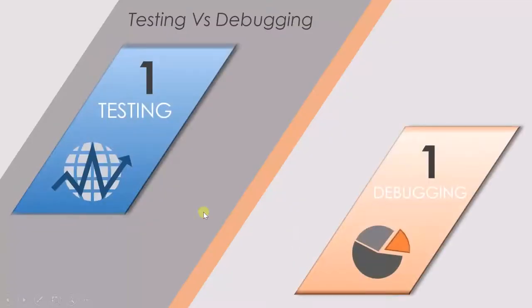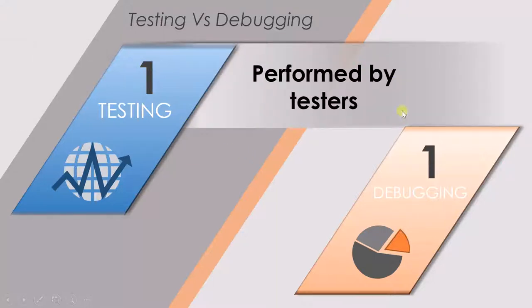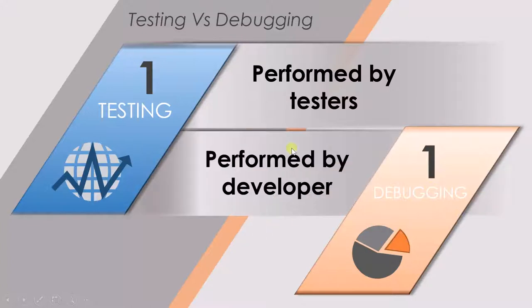The first difference between testing and debugging is that testing is performed by the testers, and debugging is performed by the developers.